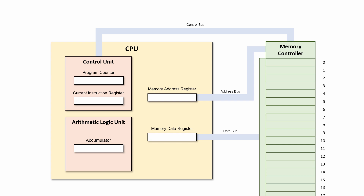Our program instructions have already been loaded into the main memory. This is taken care of by an operating system, such as Windows 11, when the program is launched by the person using it. These instructions are of course stored in binary machine code, but it's convenient for us to visualise them like this. Each of these instructions refers to a memory location by its address. LDA 3 tells the CPU to load whatever's in location 3 into the accumulator, and ADD 4 tells the CPU to add whatever's in location 4 to whatever's in the accumulator.